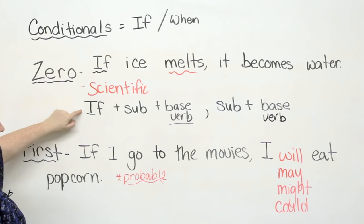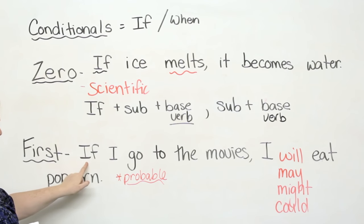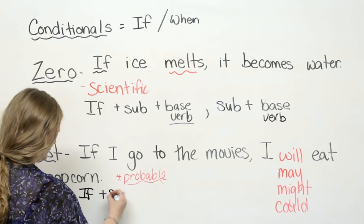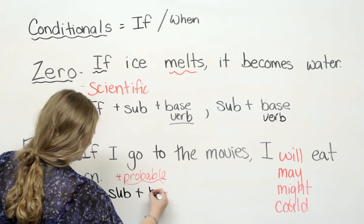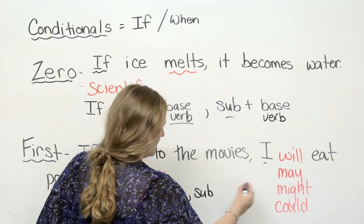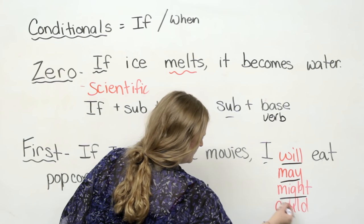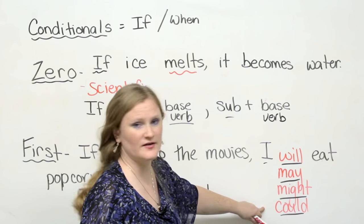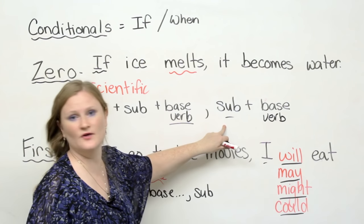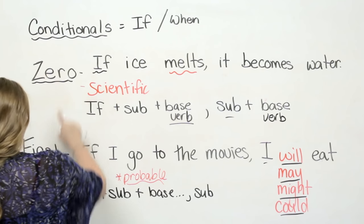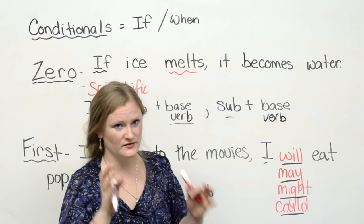Let's look at the structure of this one. In the zero conditional, this is the structure. Can you tell me what's different about the first conditional? We have if plus subject plus base, so this is going to be the same. If plus subject plus base. Then again we have subject. Uh oh, uh oh, uh oh, what are these guys doing here? Oh no. These are called modals. The modals in English are will, may, might, and could. In the zero conditional we do not use a modal. It's bad. So the only difference in structure between zero and first conditional is first conditional you must use a modal.